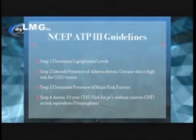Step three is to determine major risk factors. This includes cigarette smoking, hypertension with a blood pressure reading of greater than 140 over 90 mmHg, low HDL cholesterol which is less than 40 milligrams per deciliter, family history of premature coronary heart disease in male first-degree relatives under 55 years of age and female first-degree relatives under 65 years of age, and age — men greater than 45 and women greater than 55 years old.